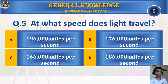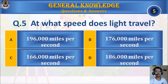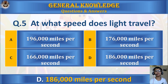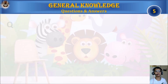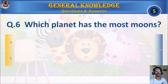The answer is B: Smell. Question 5: At what speed does light travel? A: 196,000 miles per second, B: 176,000 miles per second, C: 166,000 miles per second, or D: 186,000 miles per second. Your time starts. The answer is D: 186,000 miles per second.